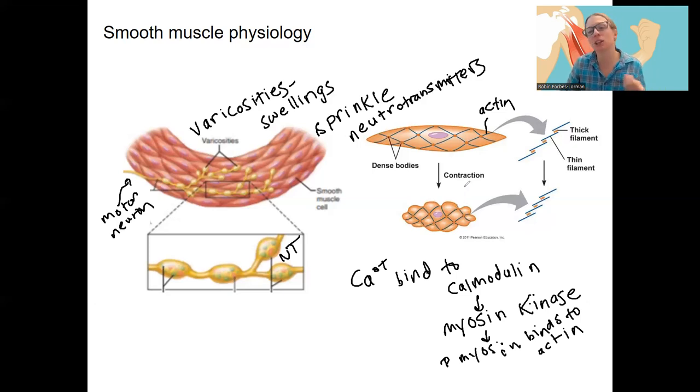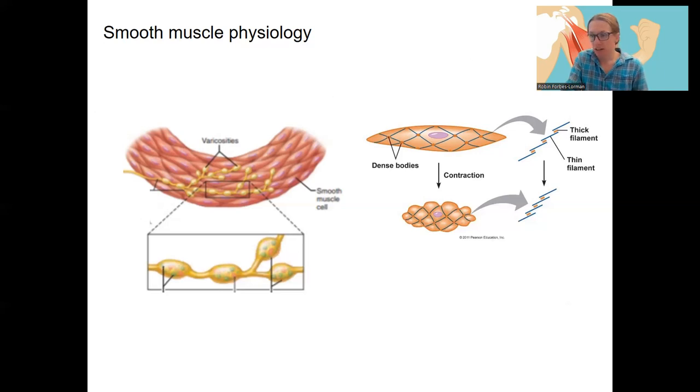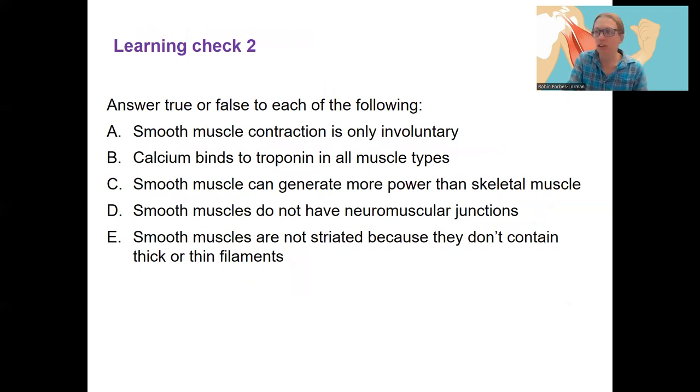So this results in a pretty low power output compared to skeletal muscle, but also sustained contractions and contractions that are able to happen pretty subtly. Like we don't always notice things moving through our digestive system, although we do sometimes. So, sustained contractions over a long time and also maintaining muscle tone, so that we maintain the integrity of our digestive organs and sphincters and stuff. Okay. So that is smooth muscle in a nutshell. Here is your second learning check.